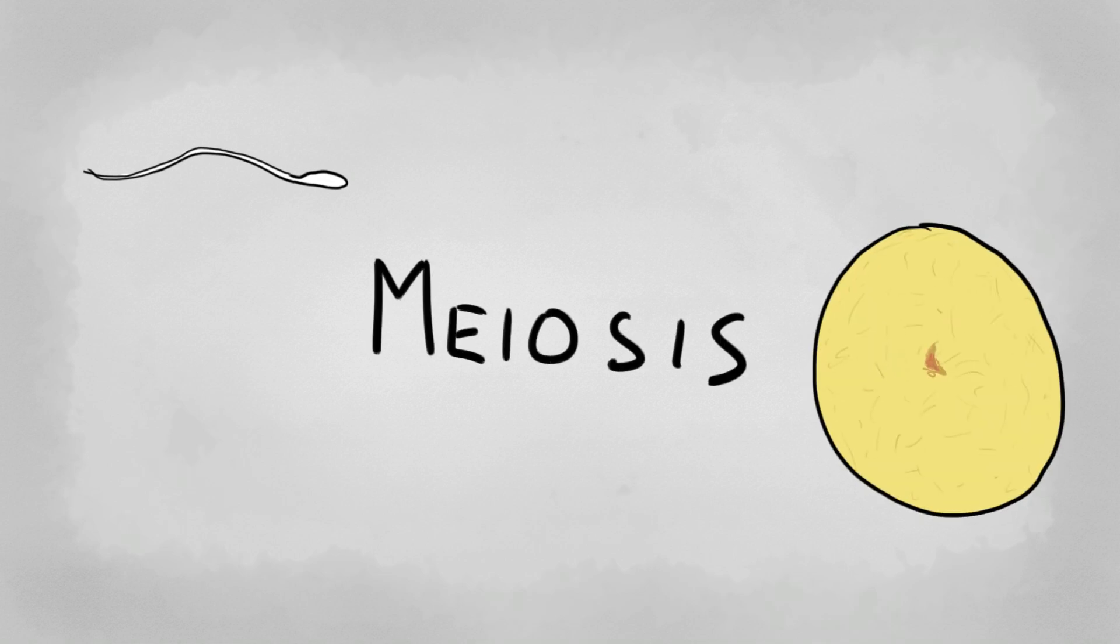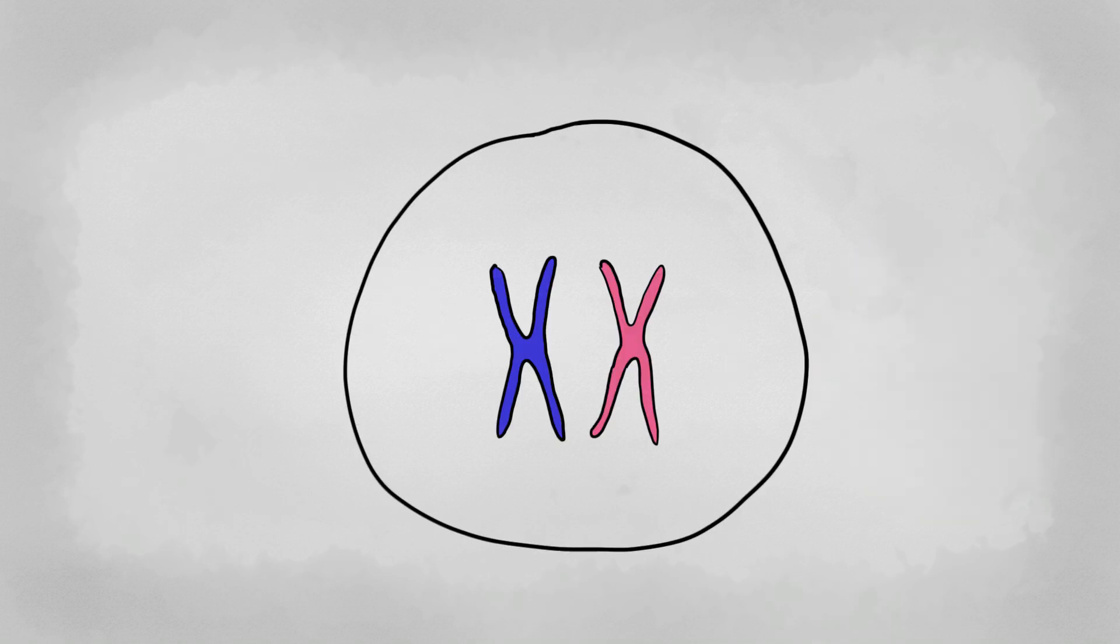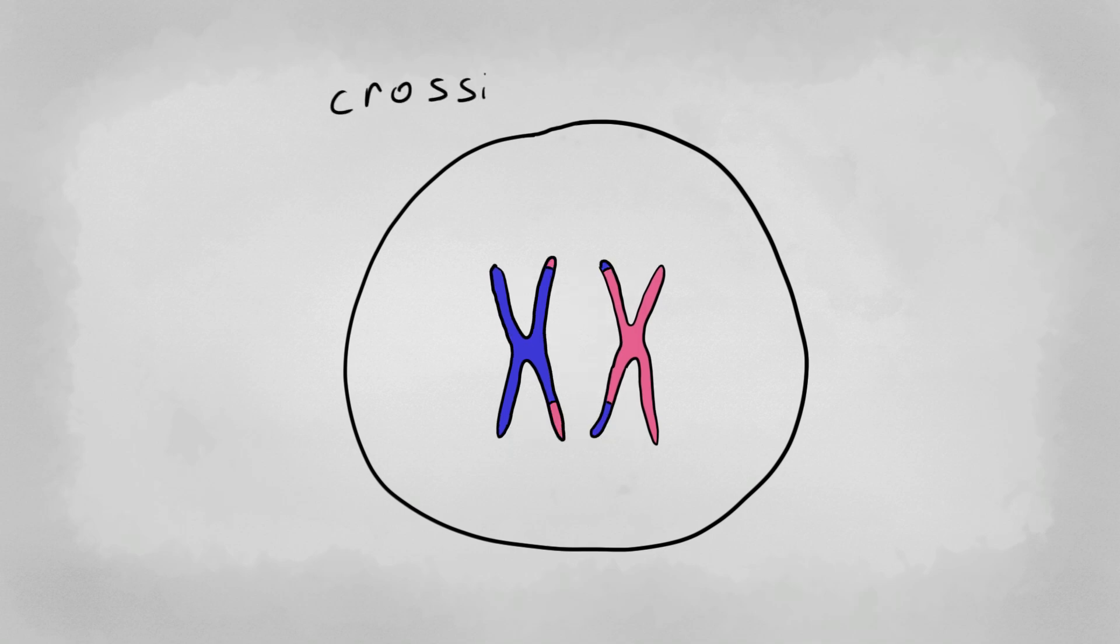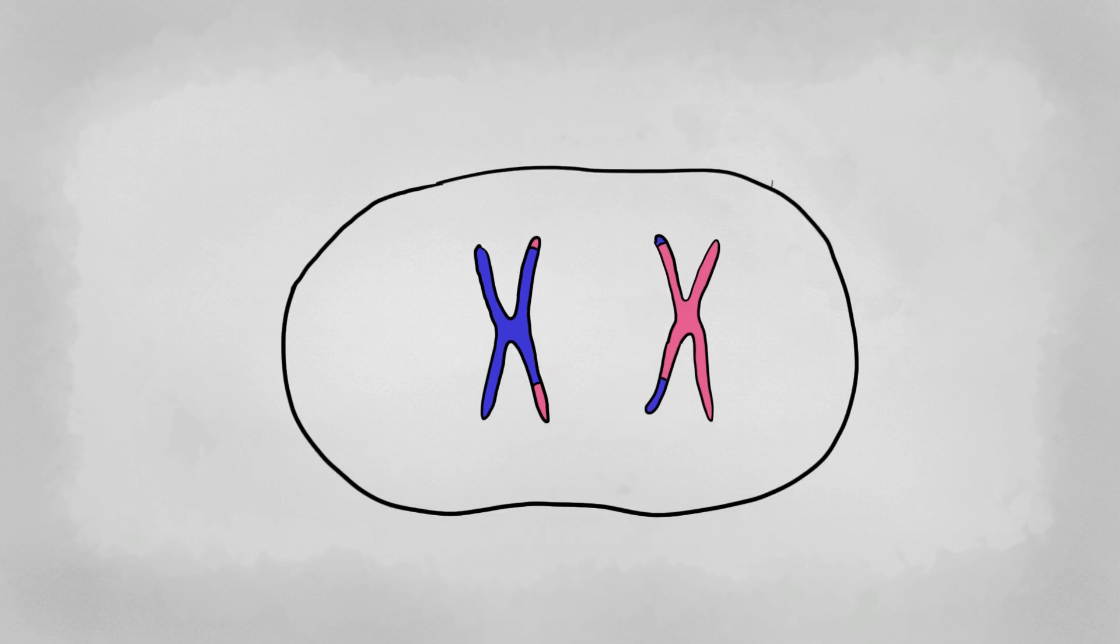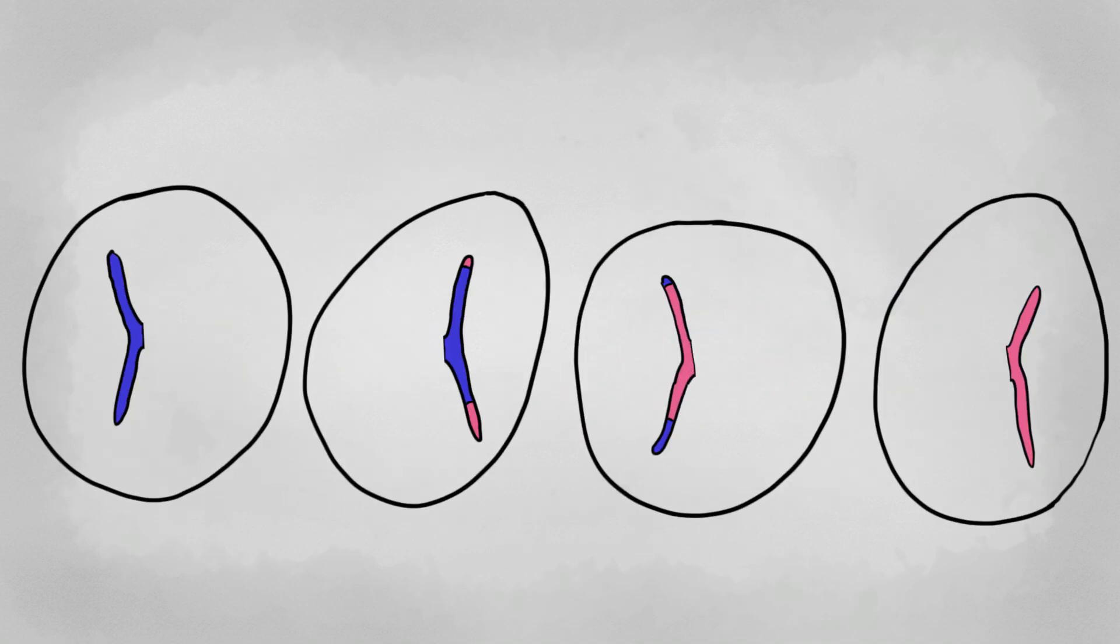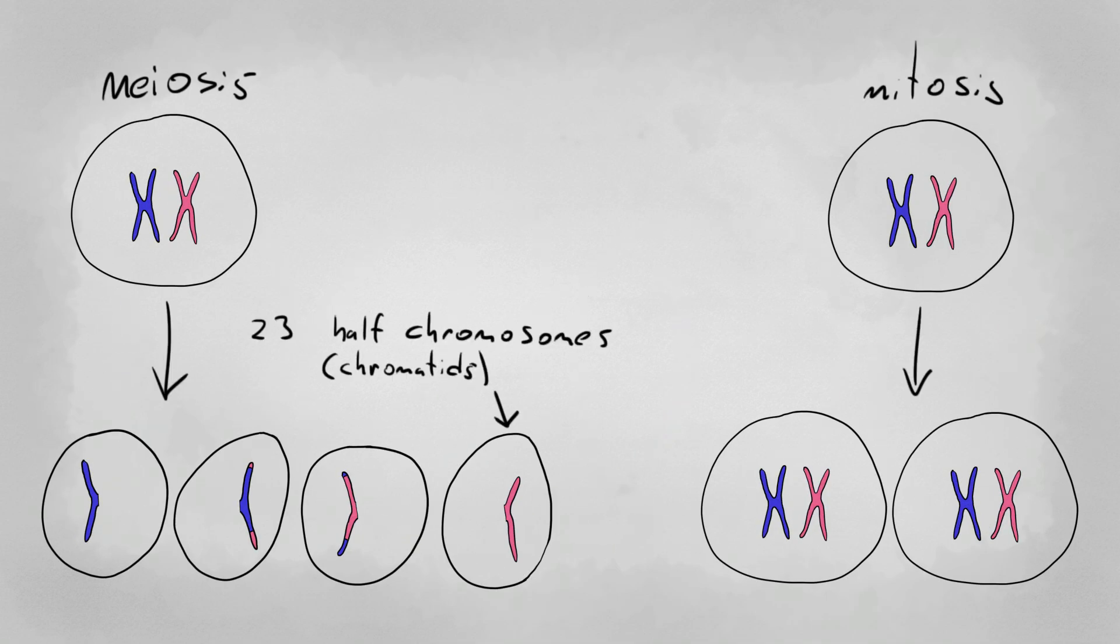But the sex cells, your sperms and your eggs, undergo a different process called meiosis. There are two important differences. Before the chromosomes split apart, they swap some of the genes. This is called crossing over. It creates chromosomes different from the parent chromosome. The other difference is that they split twice, making four cells. Each cell with only one chromatid from each of the chromosome pairs. So each of these cells only has 23 chromosomes instead of 46.